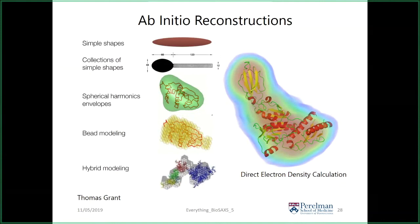Spherical harmonics describe the surface of a sphere at different levels of complexity; by applying that mathematics you can reconstruct shape in tractable ways. The next iteration — now one of the more popular manifestations — is bead modeling, where you have an ensemble of beads juggled by simulated annealing, iterated until you get a match between calculated and experimental scattering profiles. Hybrid modeling mixes known atomic structures with beads for missing bits. More recently, Thomas Grant published a very exciting new innovation: direct electron density calculation from SAXS data.